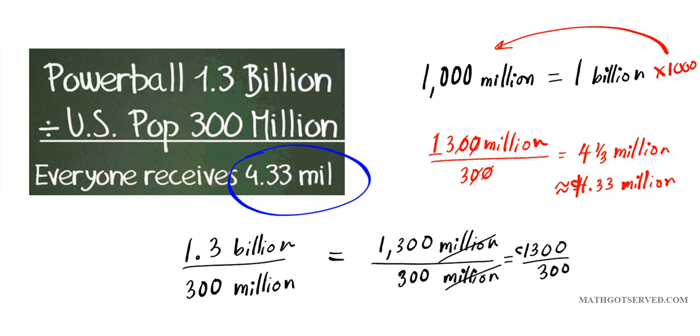Of course, we have the dollars here. And when we cancel out the zeros, 13 divided by 3 dollars is what everybody will get. And as an improper fraction, that is 4 and a third dollar.